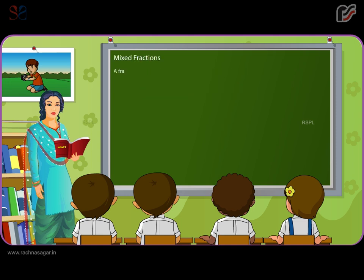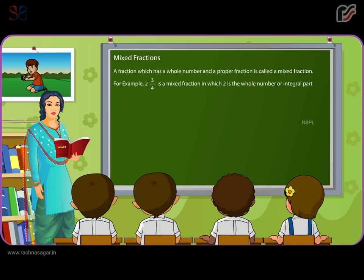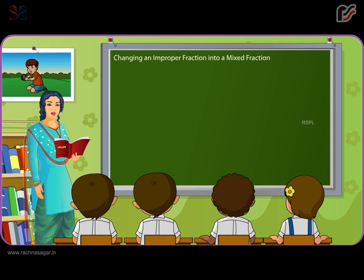Mixed fractions. A fraction which has a whole number and a proper fraction is called a mixed fraction. For example, 2 and 3 by 4 is a mixed fraction in which 2 is the whole number or integral part and 3 by 4 is the fractional part.